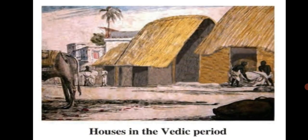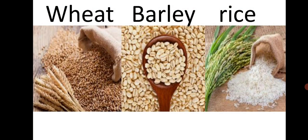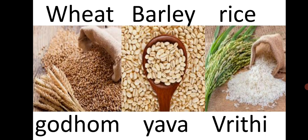The houses during the Vedic period were earthen or wattle-and-daub constructions. A house was called Griha or Shala. The diet of the people mainly consisted of cereals like wheat, barley, and rice. Words like Yava (barley), Gudhum (wheat), and Vrithi (rice) can be found in Vedic literature. The Vedic people relished milk, yogurt, ghee, butter, and honey. Black gram, lentil, sesame, and meat were also part of the diet.